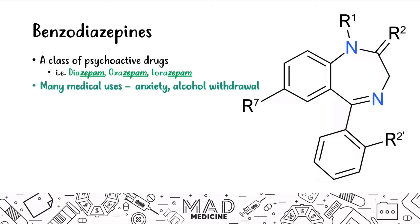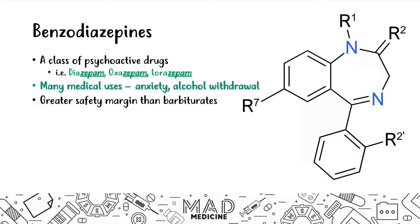There are many medical uses for benzos: anxiety, alcohol withdrawal, and they've largely replaced barbiturates. Benzos have a greater safety margin than barbiturates, which is mainly why we replaced them — barbiturates have a very narrow therapeutic index, while benzos have a higher therapeutic index. For Step 1, the classic overdose presentation involves CNS depression with normal vitals but altered mental status.